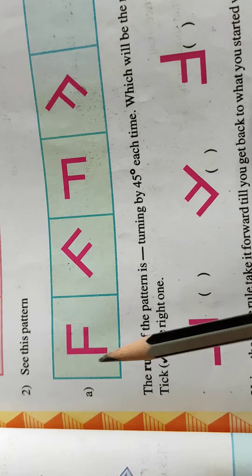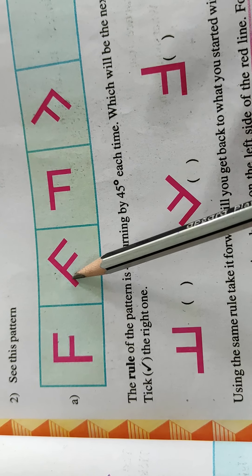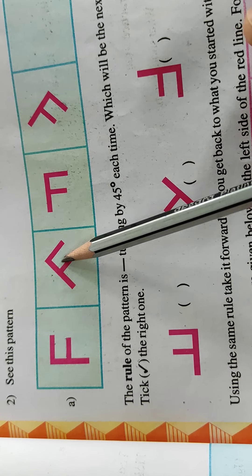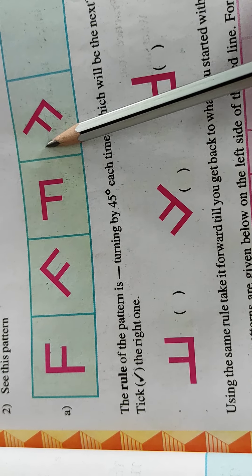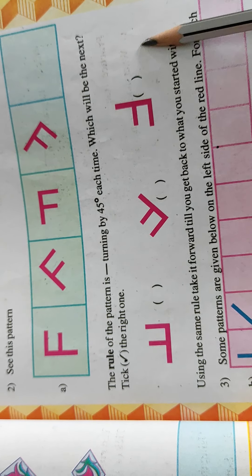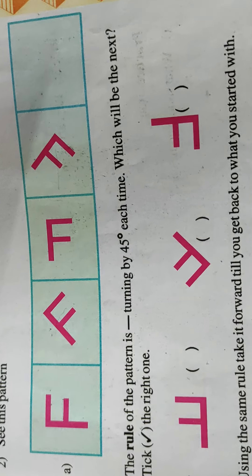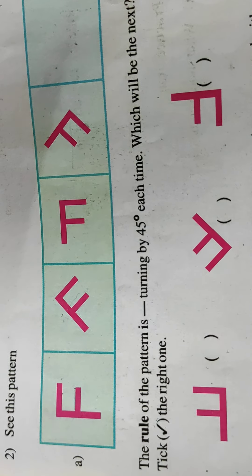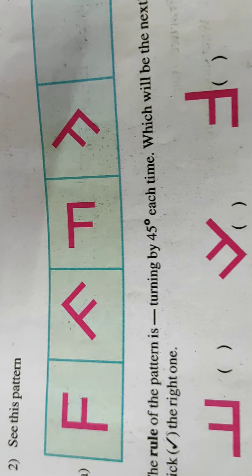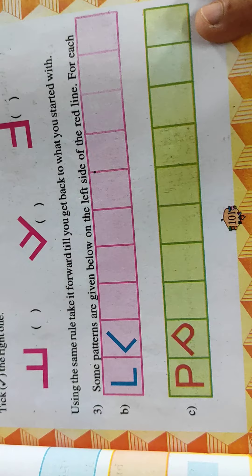Now see the pattern. Turn. F. Now you will choose. The rule of the pattern is turning by 45 degrees each time. So you can use protector also and try which will be the next. Then I will give you answer.